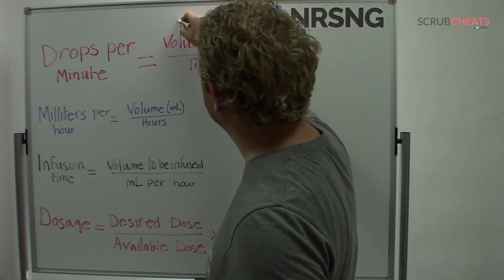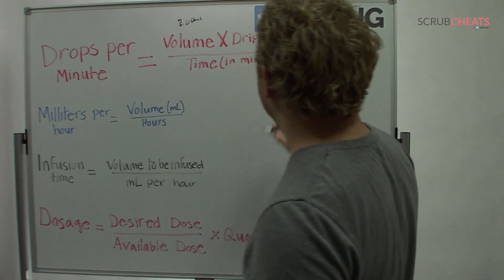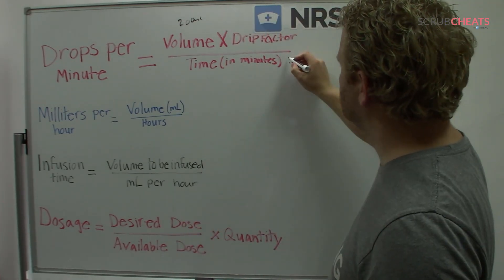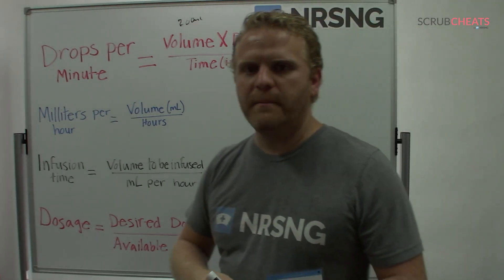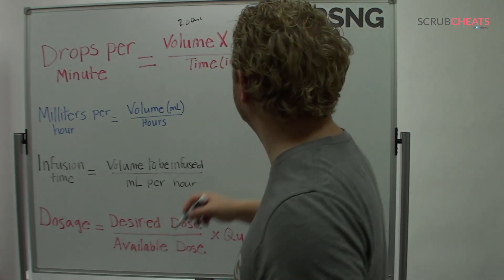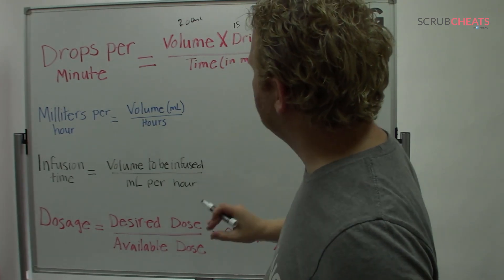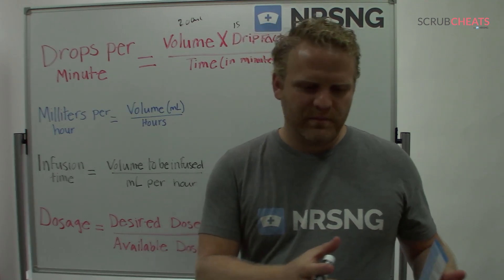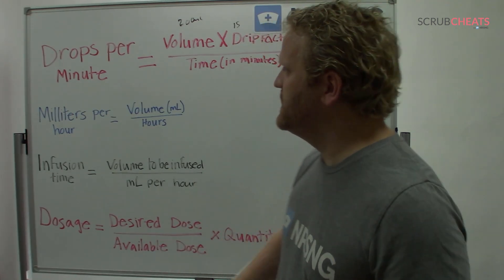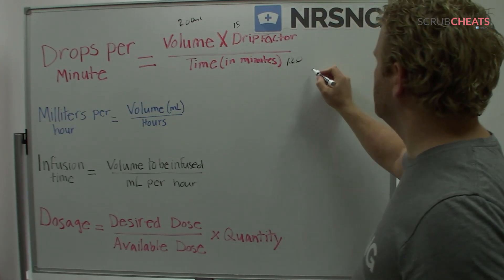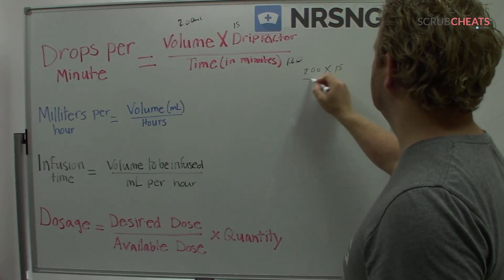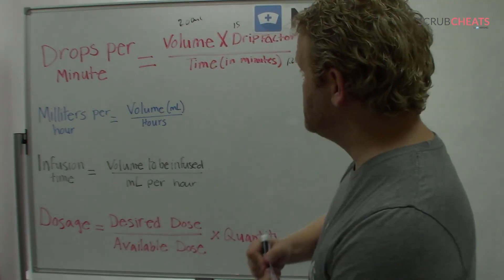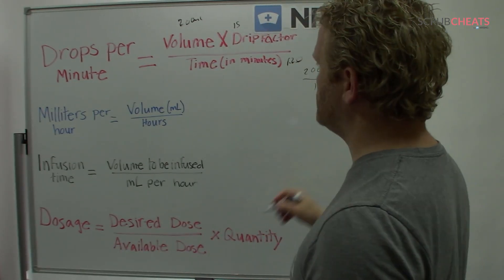Let's do an example. You have to administer 200 milliliters of a medication over two hours, or 120 minutes. The drip factor is 15 drops per milliliter. From the problem, we have everything we need. We've broken this down to a basic algebra problem — word problems can seem scary, but we can break it down quickly. All we do is 200 times 15, divided by 120, and the answer comes out to 25 drops per minute.